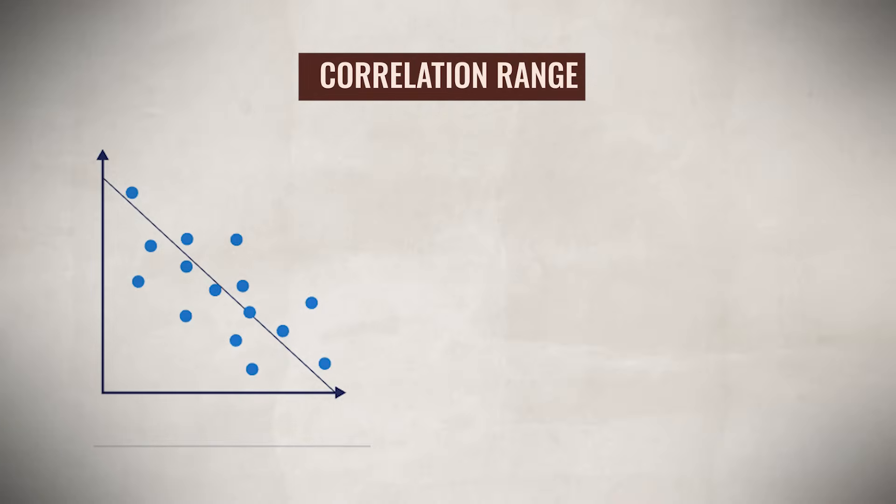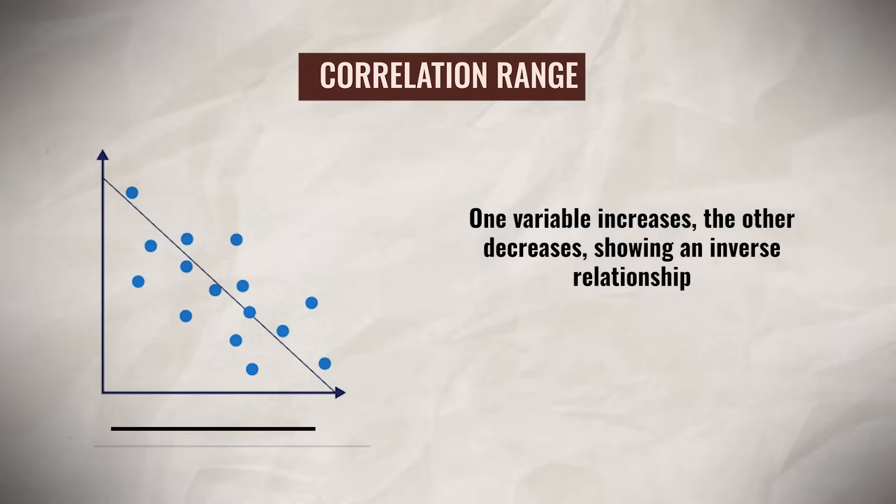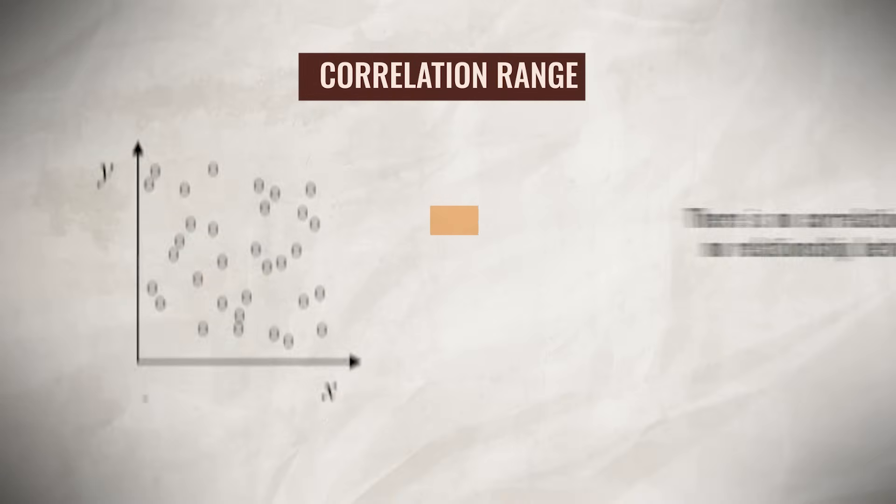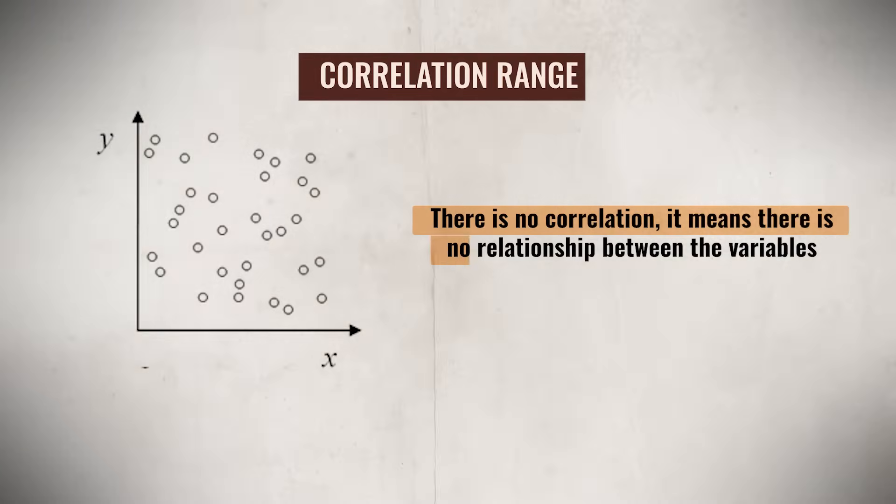On the other hand, a correlation coefficient between zero and negative one indicates that as one variable increases, the other decreases, showing an inverse relationship. This is known as a negative correlation or negative relationship, which when plotted on a scatter plot would appear as a downward trend. Lastly, if there is no correlation, it means there is no relationship between the variables. And the data points on the scatter plot will be scattered randomly.